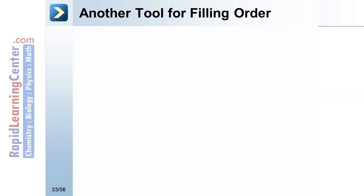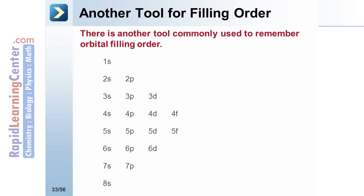Another tool for remembering orbital filling order is shown here. The s's are listed on the left from 1 to 8. The p's begin on row number 2. The d's on row number 3. And the f's on row number 4. To read this chart, follow the order.